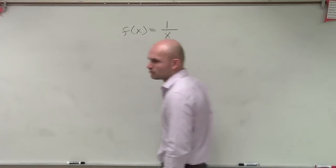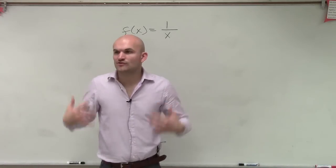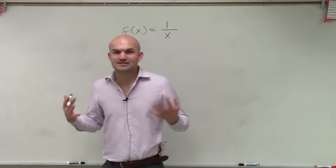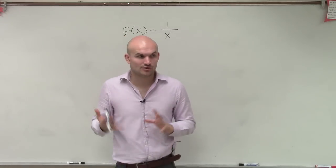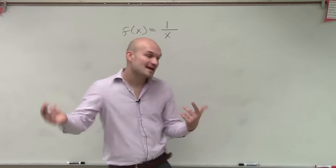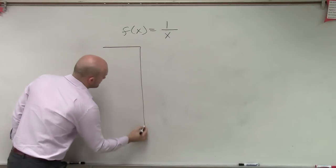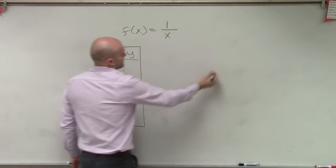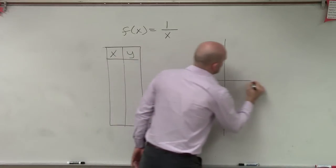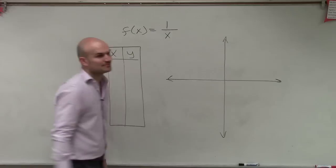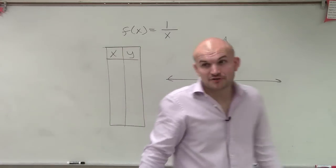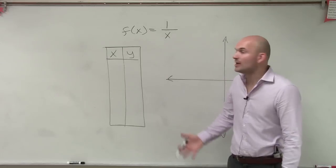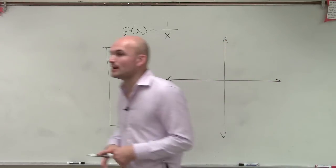Now what we need to do is talk about how we're going to graph this. When we looked at the other functions, I always said you can always default — if you don't know how to graph something, if you don't know what the parent graph is, we can always default by creating a table of values. So if you're graphing something and you forget what the function looks like, you can go and try doing a table of values.